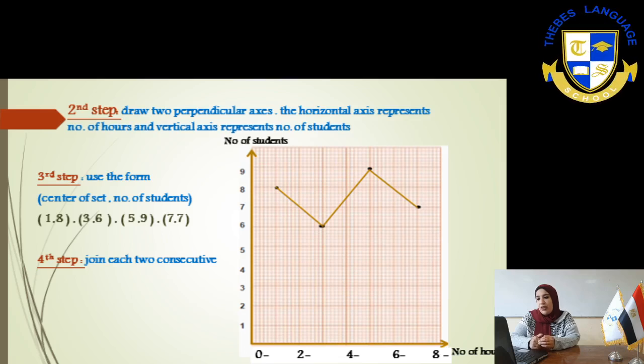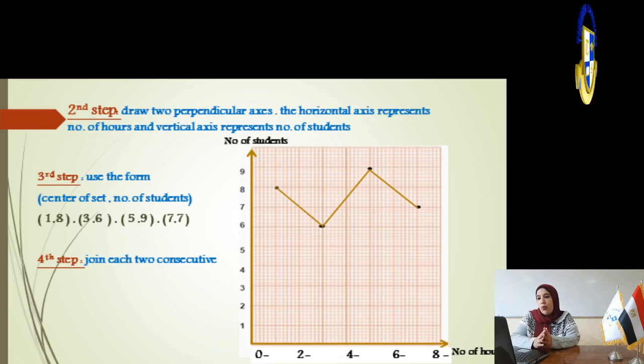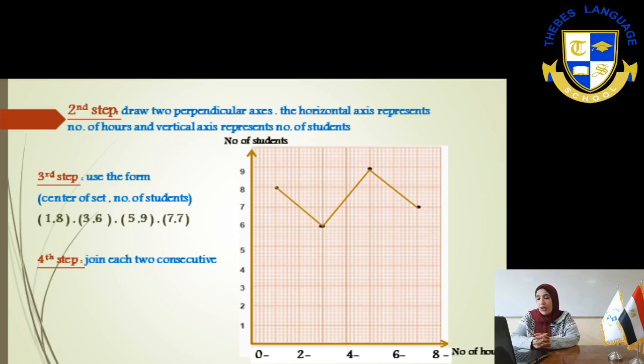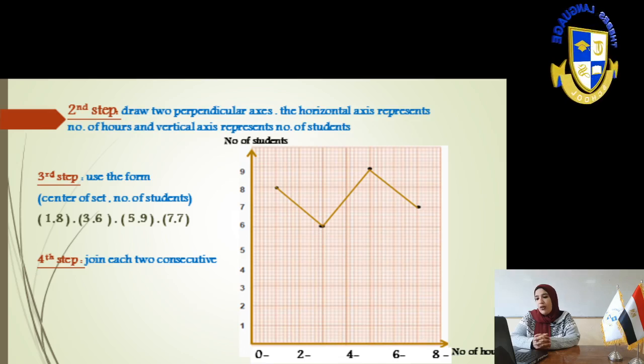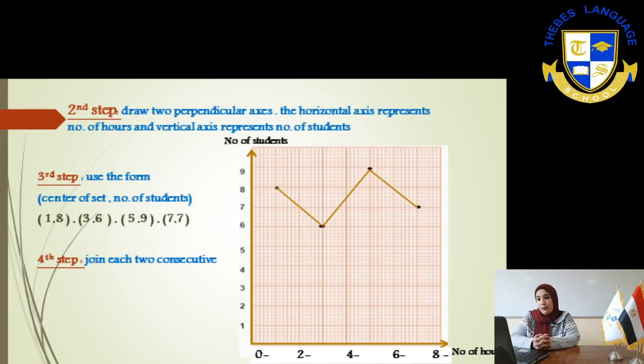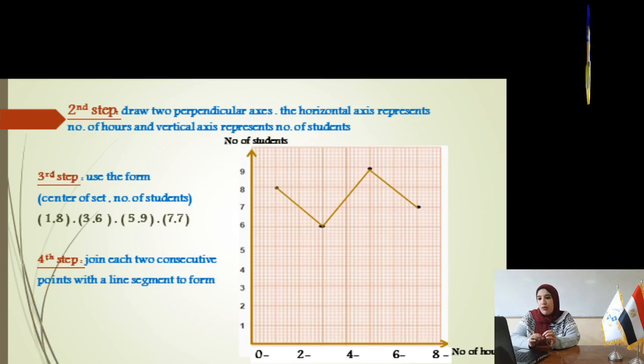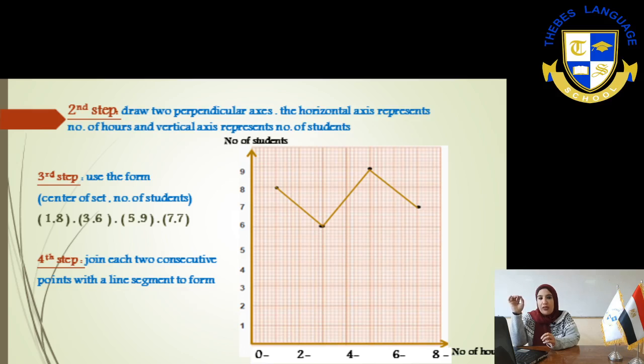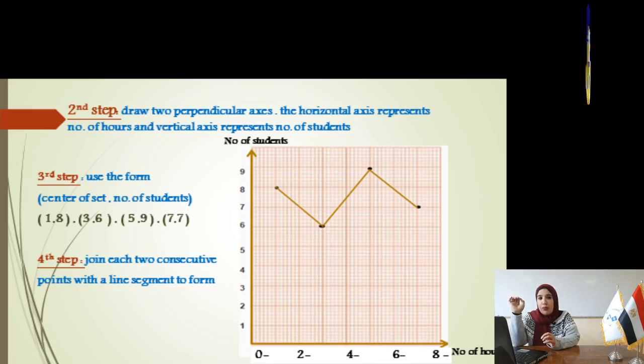Second point will be 3 and 6, 3 in the x-axis and 6 on y-axis. 5 and 9. And the fourth coordinate will be 7 and 7. Join each two consecutive points from point 1 to 2, from 2 to 3 and from 3 to 4. Order is very important.